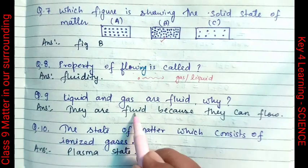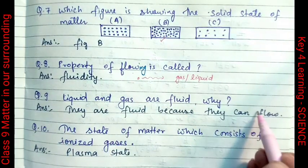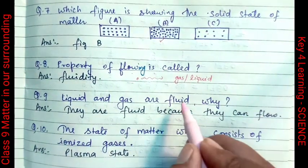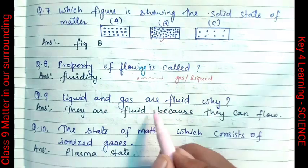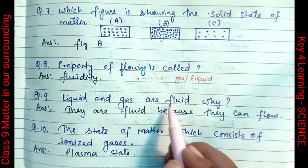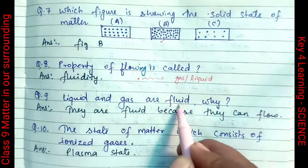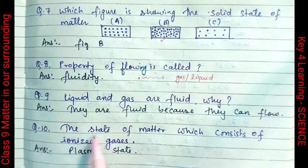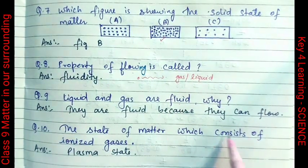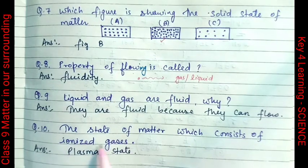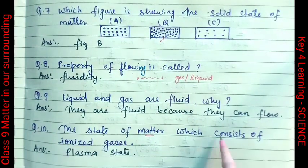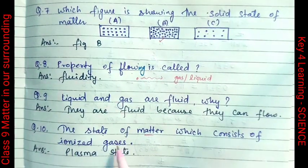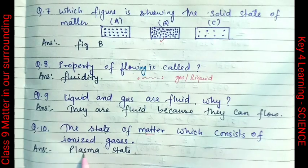Liquid and gas are fluid because they can flow — the particles can flow and move. That is why we call them fluids. Question number 10: The state of matter which consists of ionized gases is called the plasma phase.